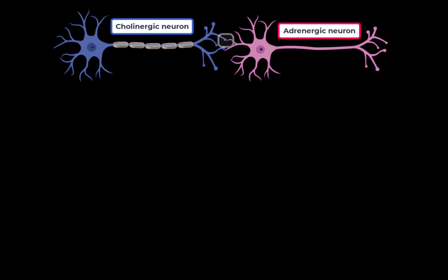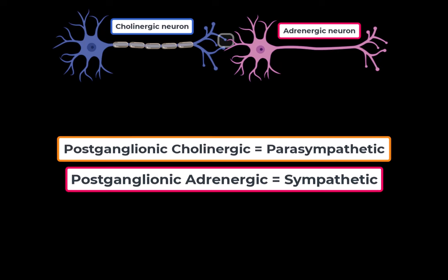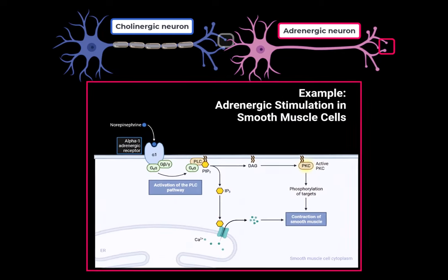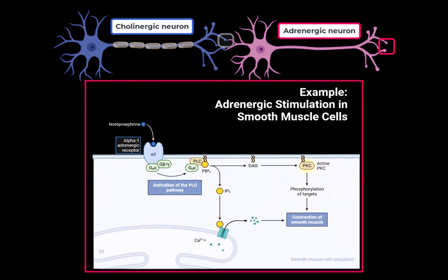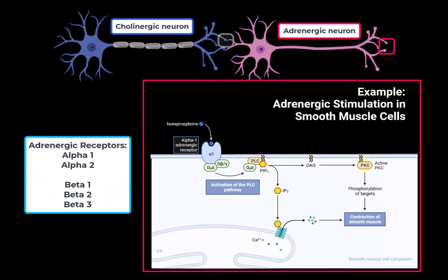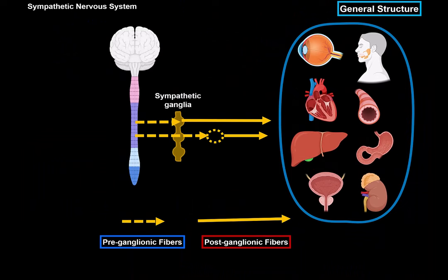There are some postganglionic neurons that release acetylcholine in the sympathetic nervous system too — to sweat glands, for example. But postganglionic cholinergic neurons are primarily related to the parasympathetic nervous system, while postganglionic adrenergic neurons are primarily for the sympathetic nervous system, releasing catecholamines. Catecholamines activate adrenergic receptors — alpha 1 and alpha 2, and beta 1, beta 2, and beta 3 — which are all G-coupled receptors. G-proteins get activated when catecholamines bind, ultimately enabling cells to change. That's how the sympathetic nervous system creates a change at the cellular level.